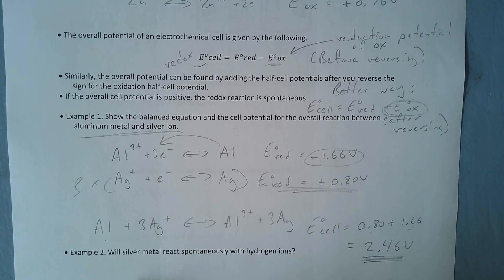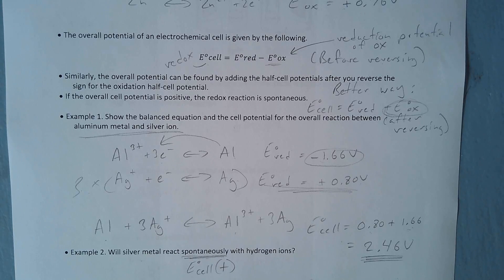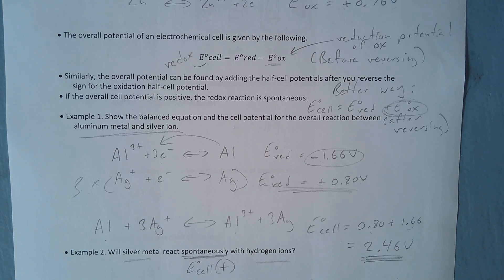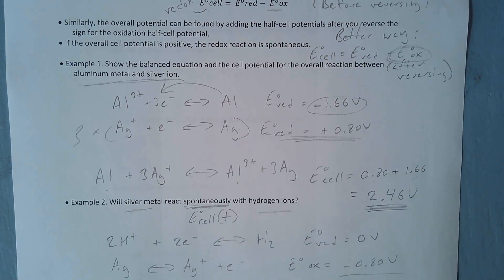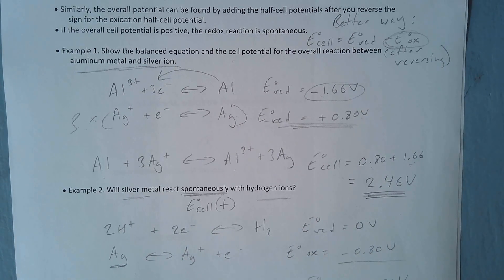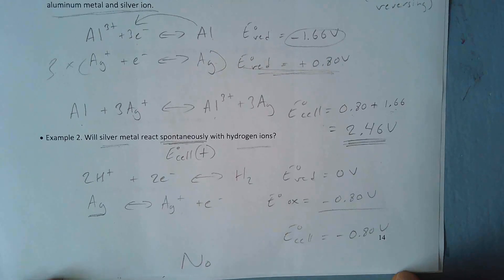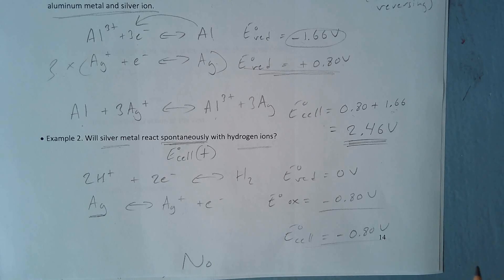Another way to assess reactions: when we say something reacts spontaneously, you want the E_cell to be positive. If the cell voltage is positive it's spontaneous; if it's negative it won't occur. For example, showing silver metal and hydrogen ions on the reactant side — flipping one around and adding the two voltages gives −0.80 V, so the answer is no: this reaction is not spontaneous because you have a negative cell voltage.